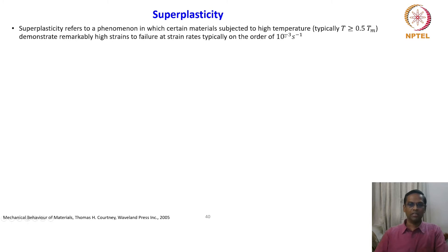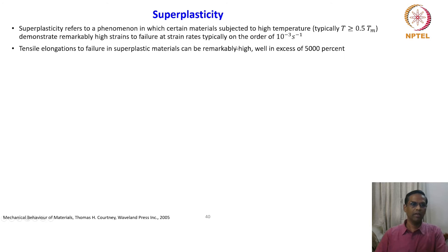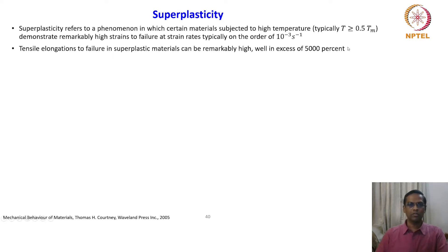That happens only with certain conditions: the temperature of deformation should be in the order of 0.5 Tm, the strain rate should be very slow, and we will later see that grain size also has some influence. Tensile elongation to failure in superplastic material can be remarkably high — well in excess of 5000 percent. We are not talking about 100 or 200; it is in the order of thousands.